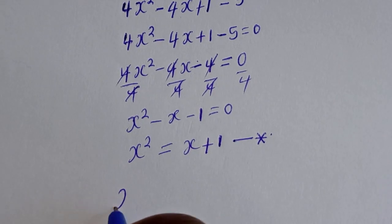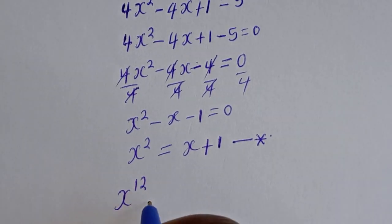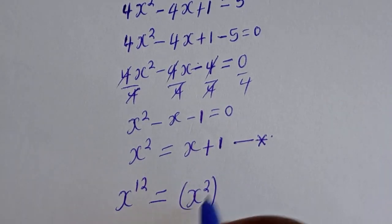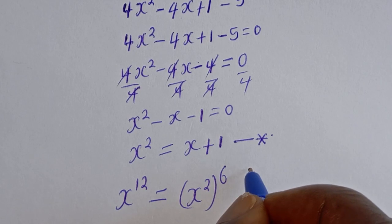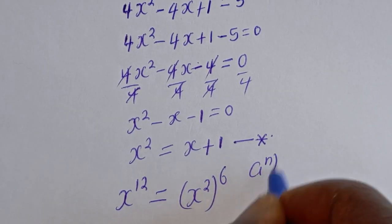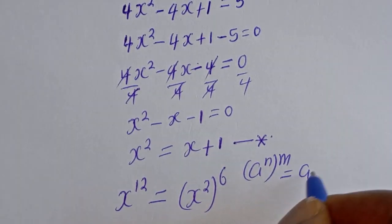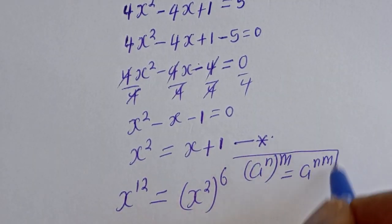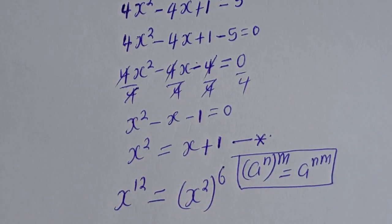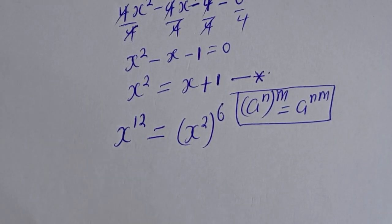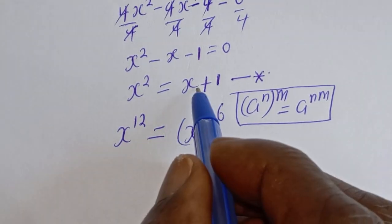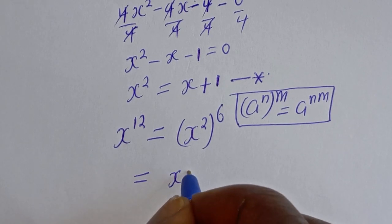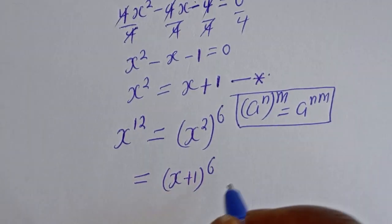Now, x raised to the power of 12 can be written as (x squared) to the power of 6, using the exponential rule that a to the power of n, to the power of m, equals a to the power of n times m. Since x squared equals x plus 1, we substitute: this equals (x plus 1) to the power of 6.